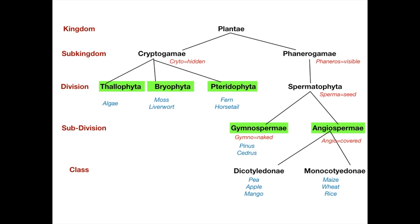Phanerogamae has only one division called Spermatophyta. 'Sperma' means seed and 'phyta' means plant, so Spermatophyta are seed-bearing plants. Spermatophyta is further divided into two subdivisions: Gymnospermia and Angiospermia — commonly known as gymnosperms and angiosperms. 'Gymno' means naked and 'angio' means covered. In gymnosperms the seed is naked and not covered within a fruit. Examples are pines and Christmas trees, which have naked seeds.